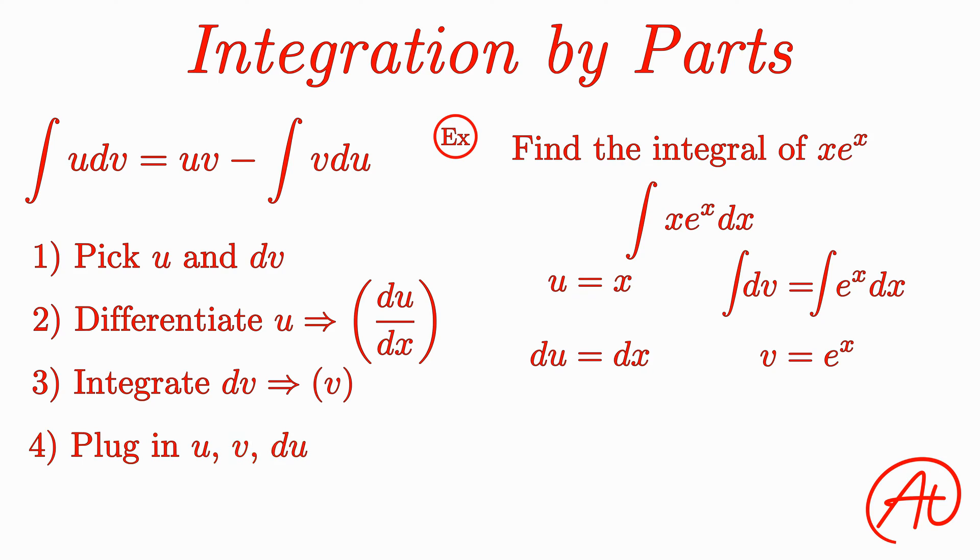This tells us that the complex integral of x times e to the x is equal to x times e to the x minus the integral of e to the x dx. So after that little bit of work, we were able to translate our difficult integral into a new integral that is much easier to solve. In the case of our example, this new integral ends up being just e to the x, which gives us our final answer of x times e to the x minus e to the x.